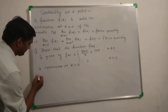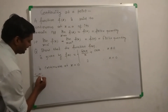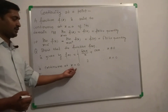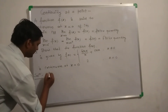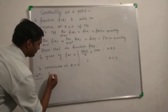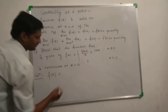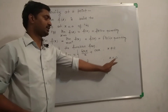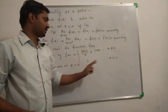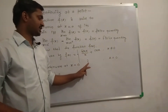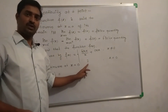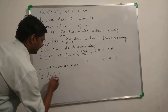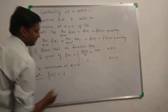First, we find the value of the function at x = 0. So f(0) is given directly. When x = 0, the value of the function is f(0) = 2.